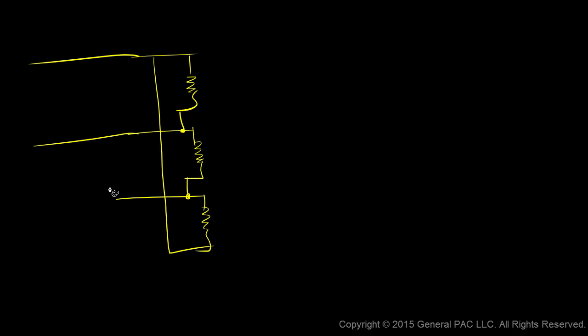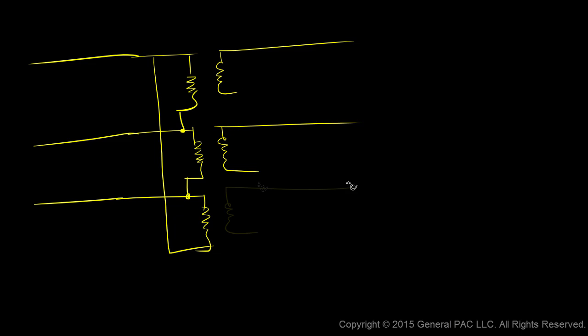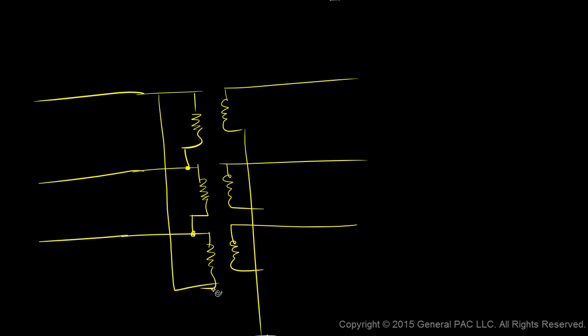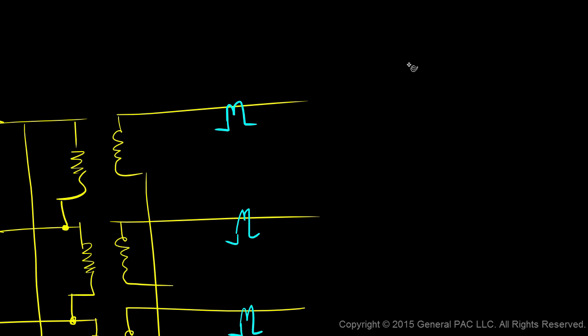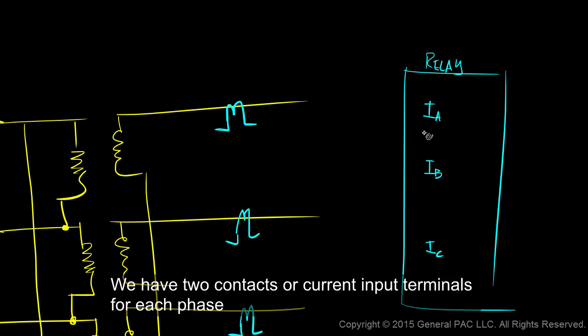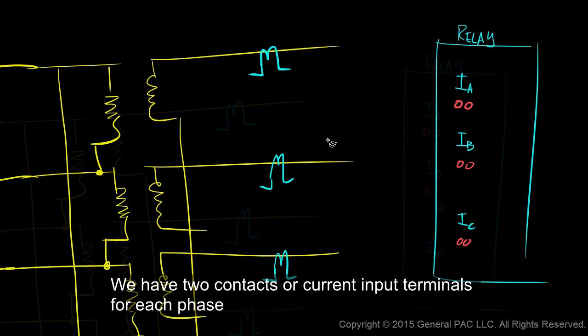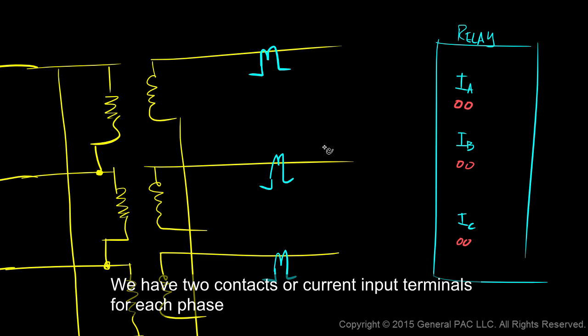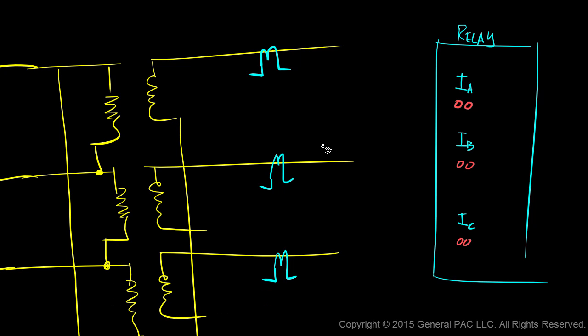Let's begin by drawing a delta-connected transformer. This is line A, this is line B, and this is line C. On the secondary side, suppose we had a Y-connected transformer that was grounded. On this Y-connected secondary side, we have CTs connected on each phase. Let's suppose there is a relay that we want this CT to connect to. On this relay, we have inputs for IA, IB, and IC, and we have two contacts for each phase.